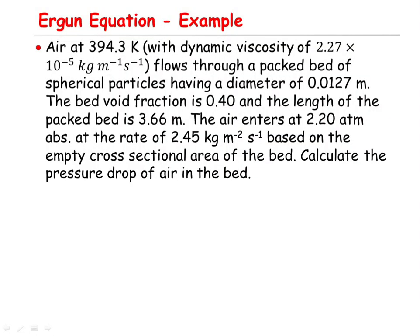Hello. Today I'm going to solve an example about the Ergun equation. The question is: air at 394.3 Kelvin with dynamic viscosity of 2.27 × 10⁻⁵ kg/(m·s) flows through a packed bed of spherical particles having a diameter of 0.0127 m. The bed void fraction is 40%, the bed length is 3.66 m. The air enters at 2.2 atmosphere absolute pressure at a rate of 2.45 kg/(m²·s) based on the empty cross-sectional area. Calculate the pressure drop of air in the bed.